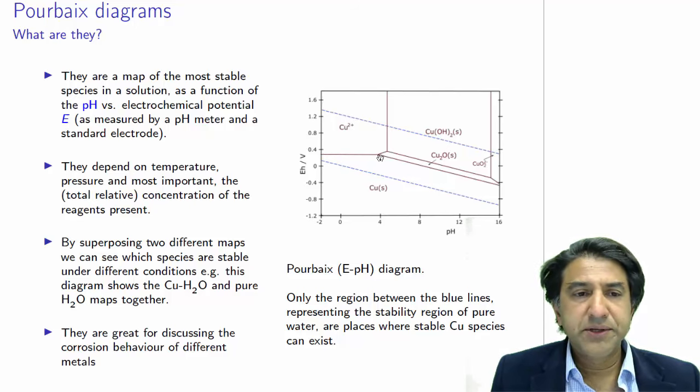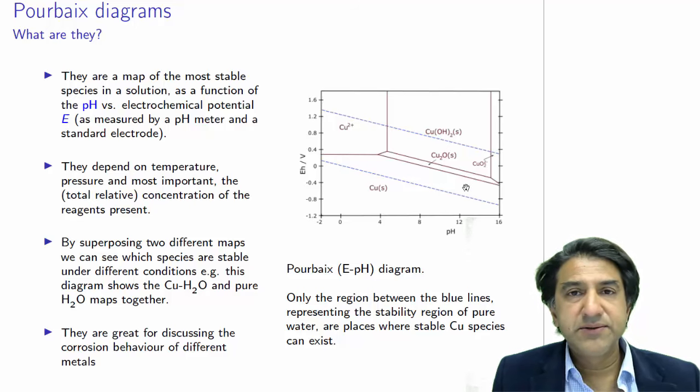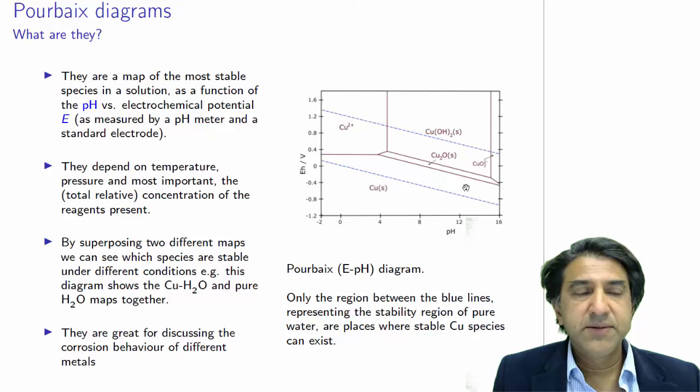And there's a point here where there is an equilibrium, more or less equal amounts of Cu2+ and copper solid. So there's an equilibrium line. And we have a series of these equilibrium lines separating regions in which different species are stable. So this is a map. The Pourbaix diagram is a map. It's a map of the most stable species in solution as a function of pH and voltage.